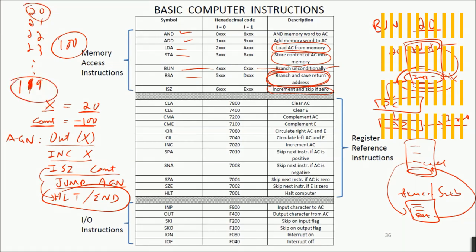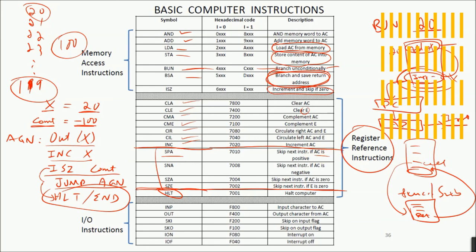Then we have register reference instructions: CLA — clear accumulator; CLE — clear carry (E flag); CMA — complement accumulator; CME — complement carry; CIR — circular shift right; CIL — circular shift left; INA — increment accumulator; HLT — halt, stop the clock. None of these require memory. Then four program flow control instructions: skip if positive accumulator, skip if negative accumulator, skip if accumulator is zero, and skip if the carry (E) flag is zero.